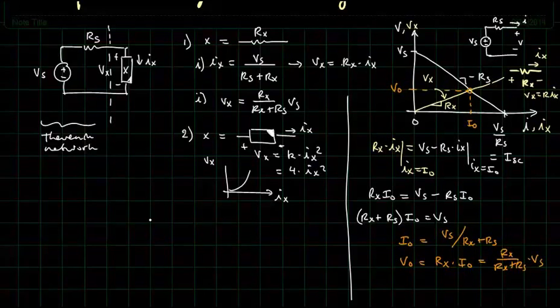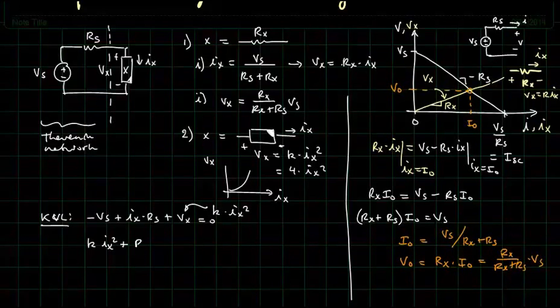Let's try to solve that. We could try to use an analytical approach here where we're going to write KVL around the loop. So, let's go ahead and try that here. So, we'll say KVL around the loop, and I'm going to go counterclockwise. We'll have minus Vs plus Ix times Rs plus Vx, but Vx is going to be K times Ix squared. And that is going to be equal to zero.